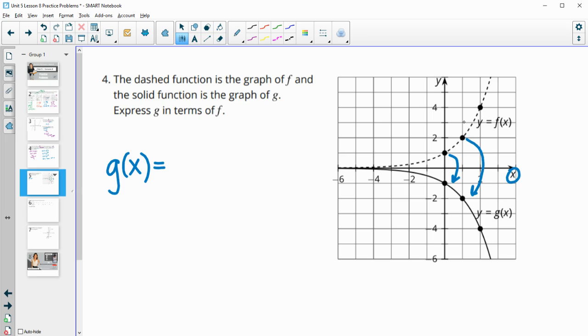The reflection over the x-axis impacts the y values. The y values are just opposite. So that negative is going to be outside of the function. So g of x is just equal to the opposite of the f of x function.